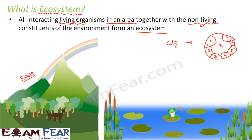So in this lesson we are going to talk in detail about the ecosystem, its various components, and how they interact. Some examples of ecosystems are pond, forest, and ocean.